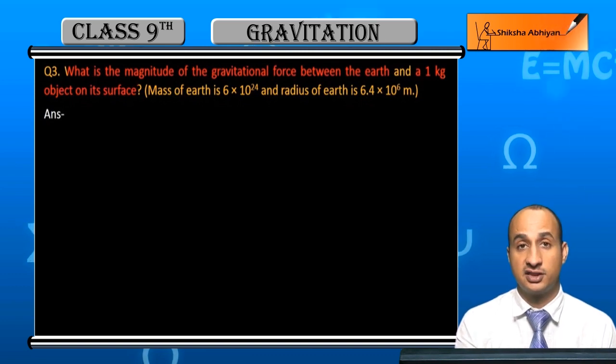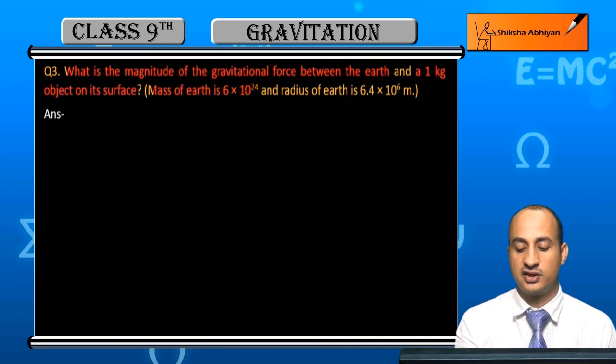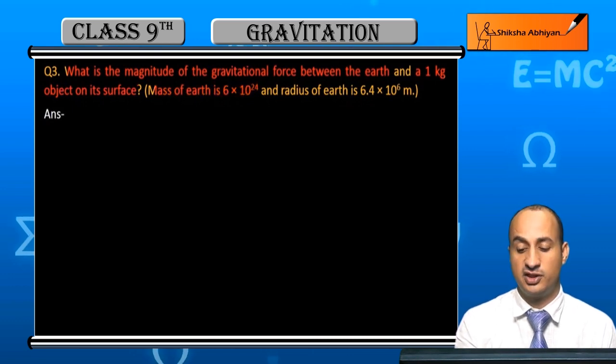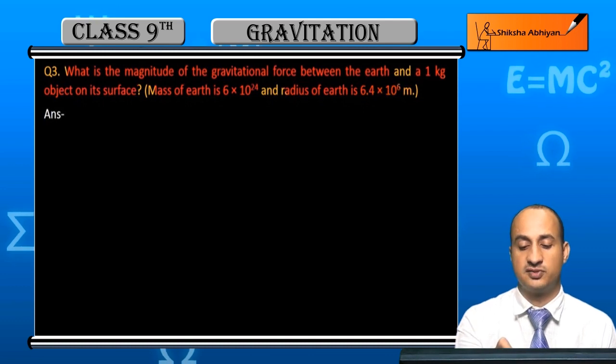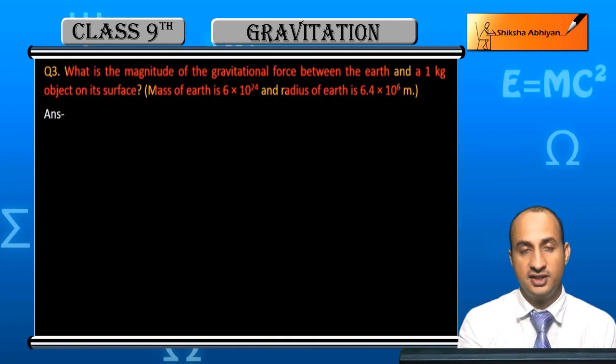A 1 kg object on earth's surface will experience gravitational force. Here, mass of earth is 6×10^24 kg and radius of earth is 6.4×10^6 meters. So students, see what happens in this case.